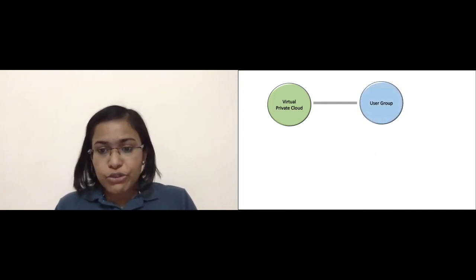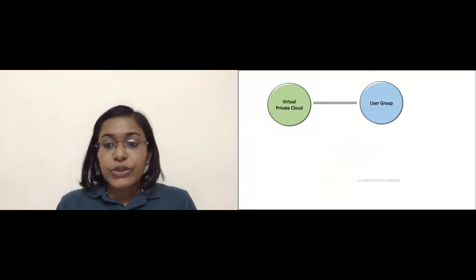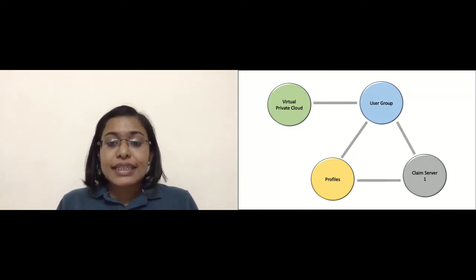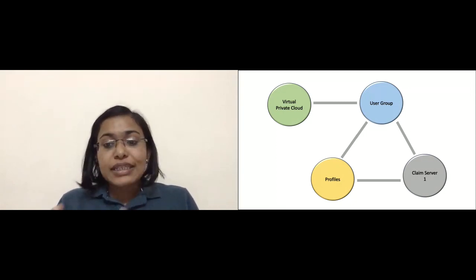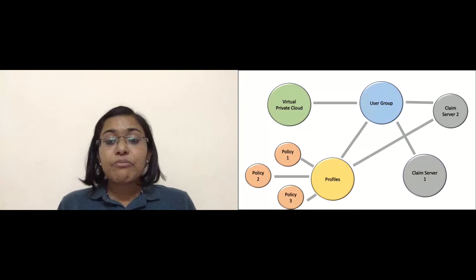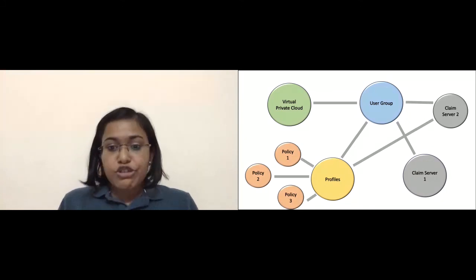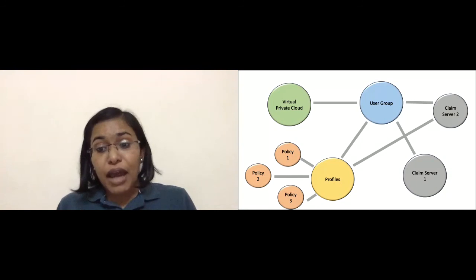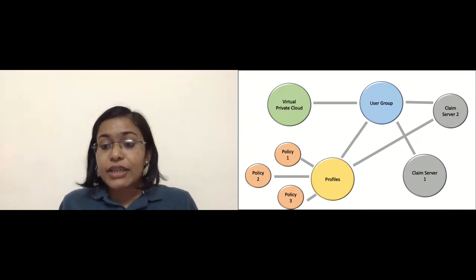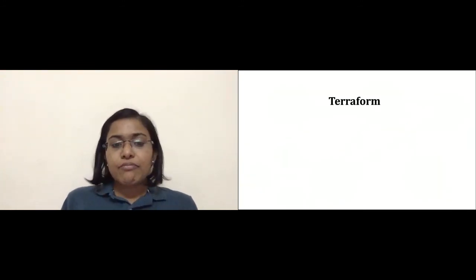Suppose you have a virtual private cloud and you created a user group on day one. On day two, you designed some profiles and brought in some servers. With every passing day, the complexity will increase. As the complexity of this graph increases, maintenance stress will also increase. On day N, you might want to add some new features. Handling a complicated infrastructure can be a challenge when done manually or when there is no way to monitor all the objects created in one go.